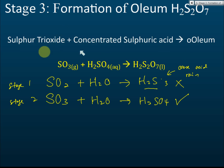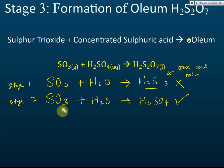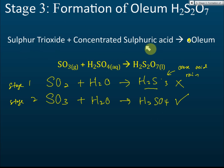But in stage three, they say we dissolve sulfur trioxide in concentrated sulfuric acid to get oleum. Why don't we just dissolve sulfur trioxide in water directly to get sulfuric acid? Why do we still want to dissolve sulfur trioxide in concentrated sulfuric acid? The reason is this: dissolving sulfur trioxide in water to produce sulfuric acid is a problematic process.